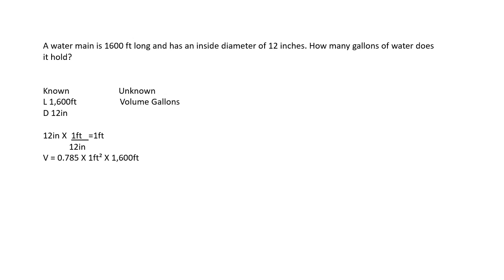We're going to go ahead and plug that into our formula: 0.785 times 1 foot squared times 1,600 feet. So 0.785 times 1 times 1 times 1,600 gives you an answer of 1,256 cubic feet. Again, volume problem solved for cubic feet, but we are looking for the volume in gallons. To convert to gallons, we do 1,256 cubic feet times 7.48 gallons per cubic foot — cubic feet cancel out — and when you do the math, you're left with an answer of 9,394.9 gallons.